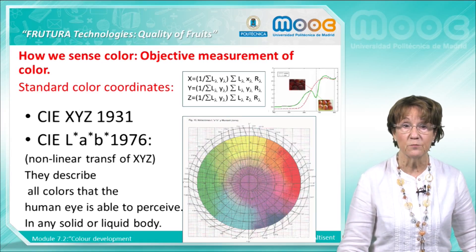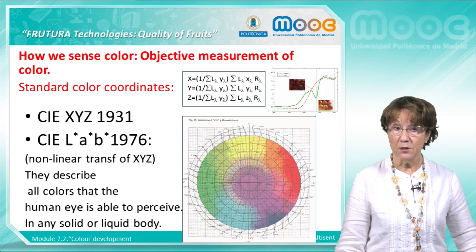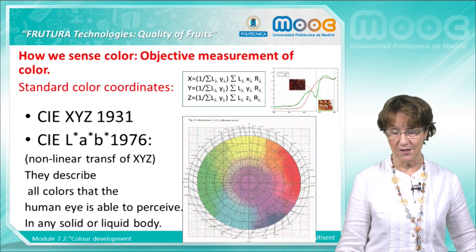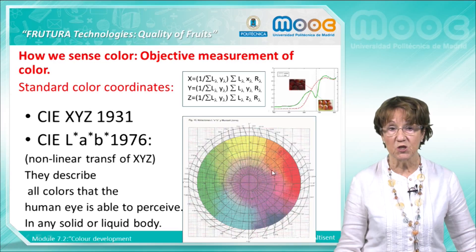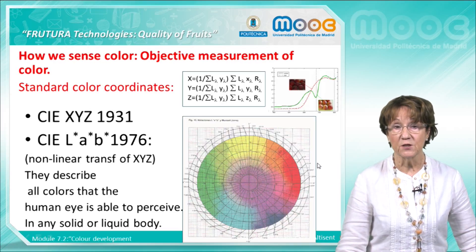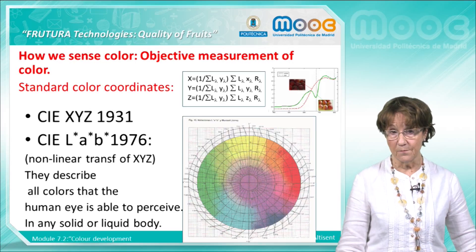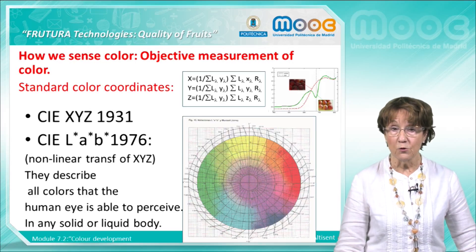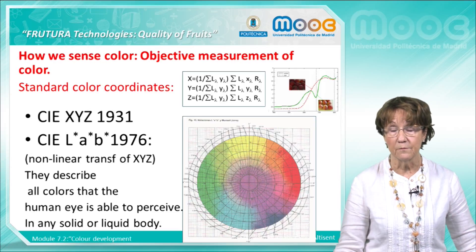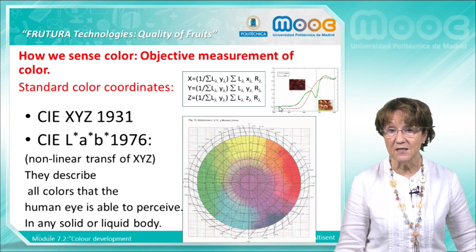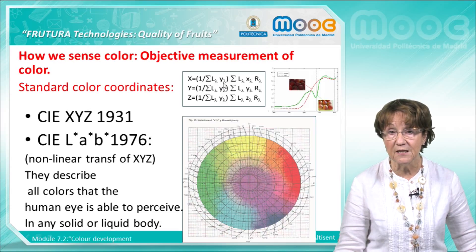The objective measurement of color is established in standard color coordinates. These coordinates were established by the Commission Internationale d'Eclairage and are called XYZ, in 1931. These coordinates are derived, as you can see here, from the values of the reflectance or reflection energy at every wavelength lambda across the visible spectrum. So with these values we compose X, Y, and Z.